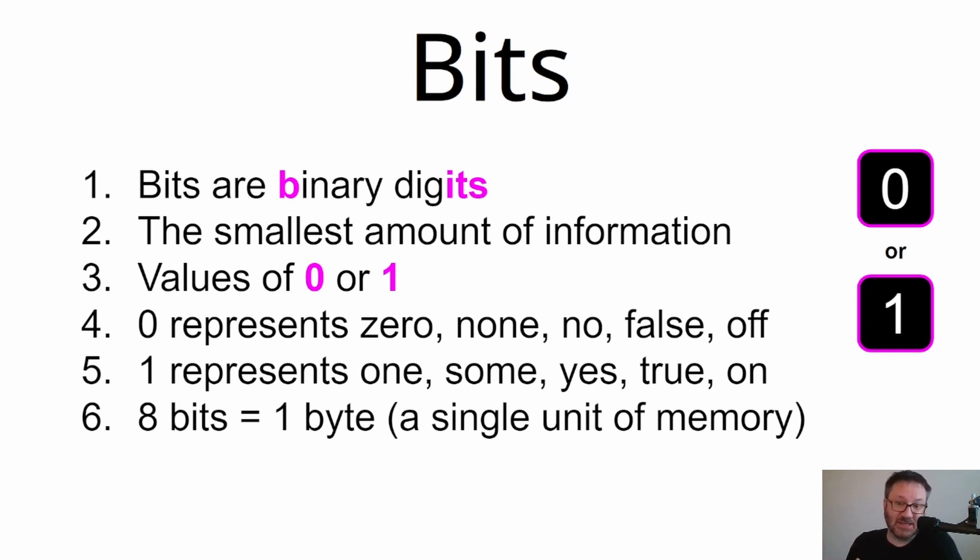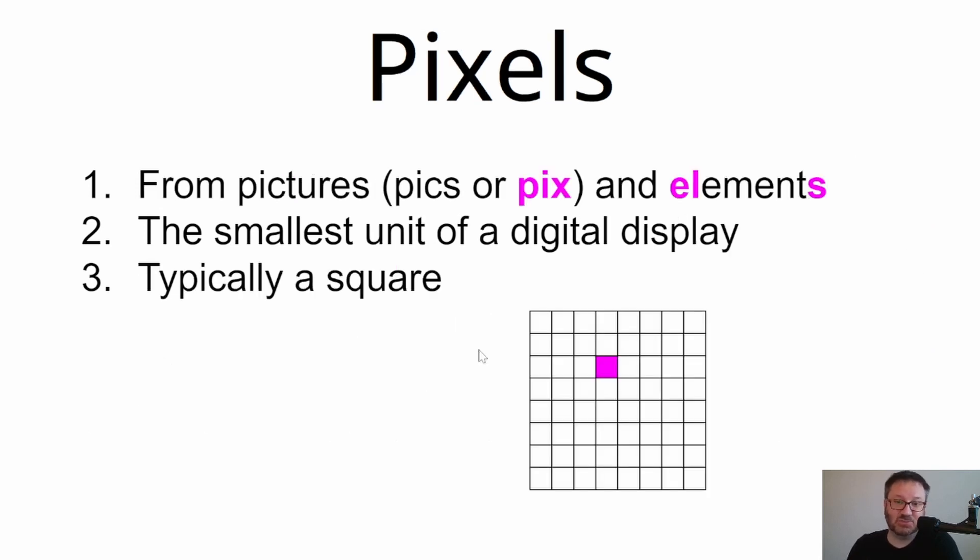Pixels—you probably have heard this when you shop for a computer and the display references pixels in some way. Pixels is derived from the word picture, more specifically pictures or pics (p-i-x) and elements. So the individual elements of a picture, which is the smallest, tiniest piece of a picture that you can get. In a digital image, it's typically a very small square, although it doesn't have to be square, but it is the smallest part of an image that you can represent.